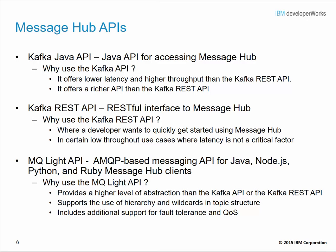The next API supported is the Kafka REST API. This is a RESTful interface to MessageHub. You might want to use it if you want to get started quickly with the MessageHub service, and in certain cases where latency and throughput are not primary considerations.